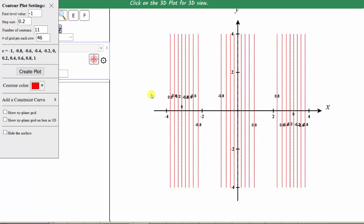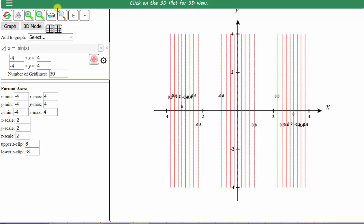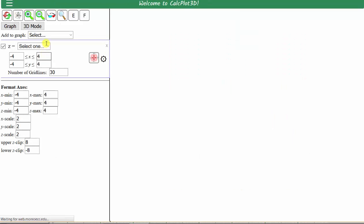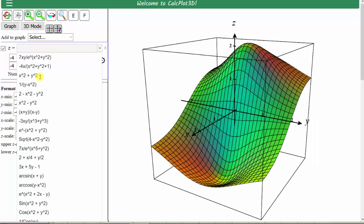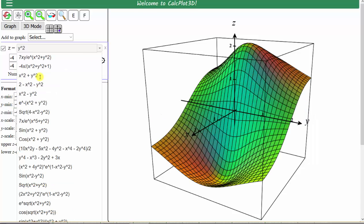Our next function is f of x comma y equals y squared. Let's exit here, reset the app, enter the new function. Enter z equals y to the second, or y squared, enter.